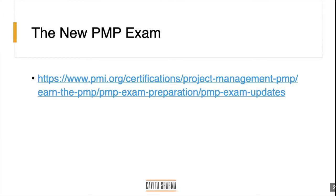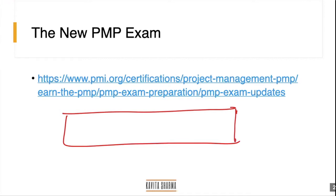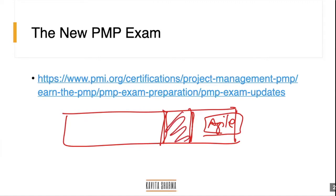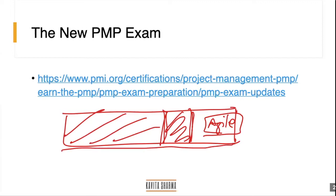PMP is not only for IT people. The current PMP structure after the PMI 2021 update covers traditional project management, hybrid project management, and Agile. Agile can be used in a lot of places, not only in IT. Hybrid is used in automobiles, insurance, and other industries. The certification is a combination of all three methodologies, so don't worry if you're not from an IT background.